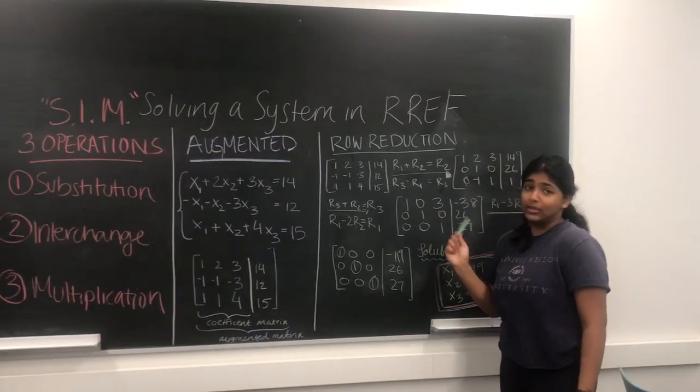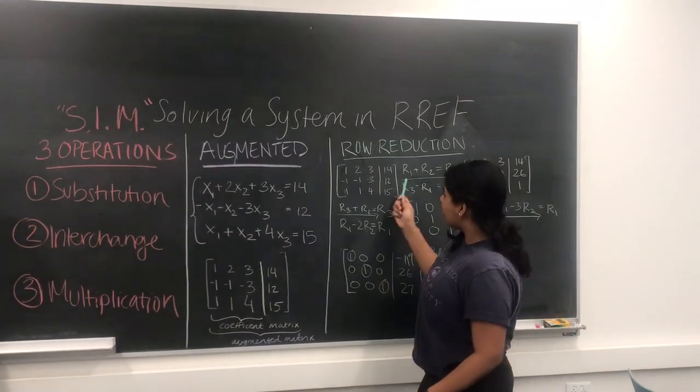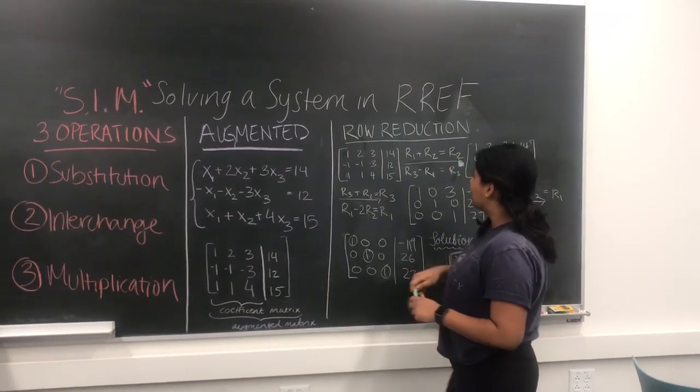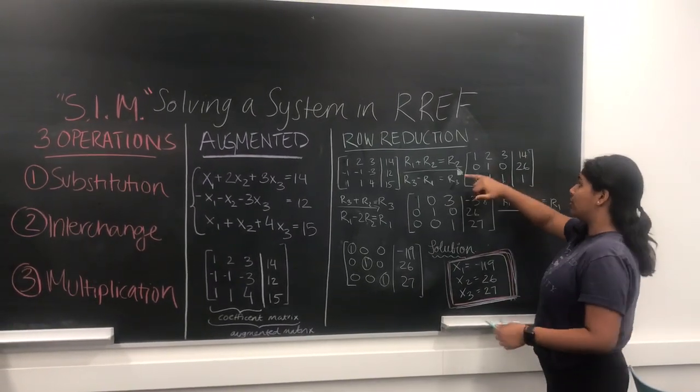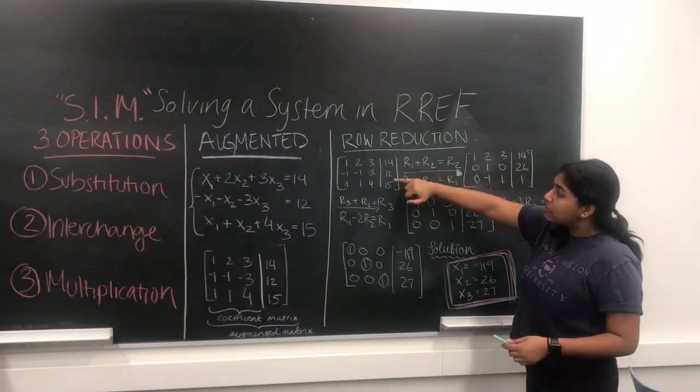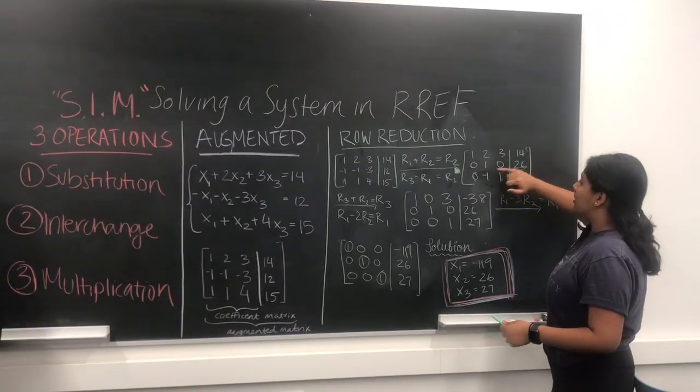In our example here, we're going to focus mainly on substitution. So we've written our augmented matrix here, and we're going to use two operations to get to this one. So in this one, we've basically substituted row 2 for row 1 plus row 2, so that's where we get 0, 1, 0, 26.